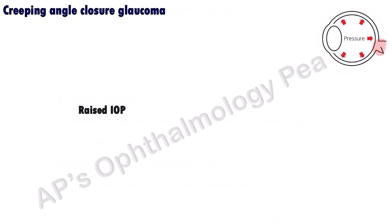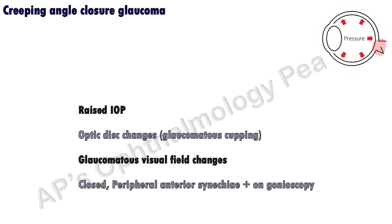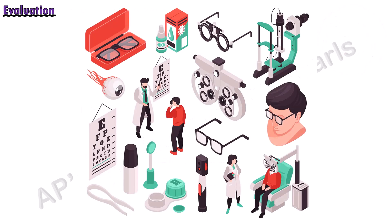Creeping angle closure is a rare angle closure glaucoma that presents like an open-angle glaucoma. The intraocular pressure is raised, typical glaucomatous disc and field changes are present, and a closed angle with peripheral anterior synechiae are seen on gonioscopy.